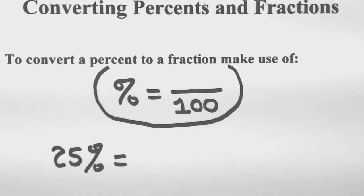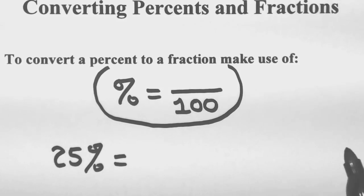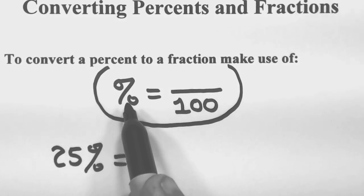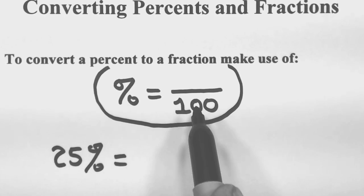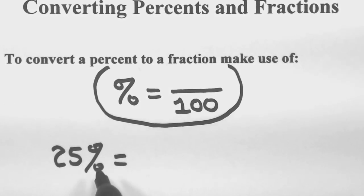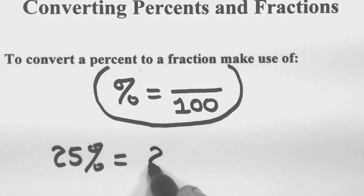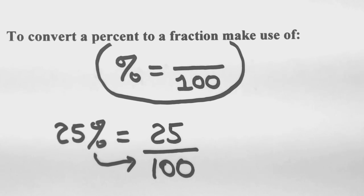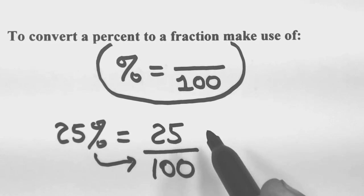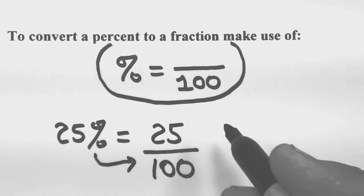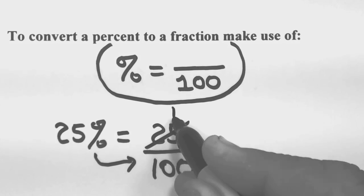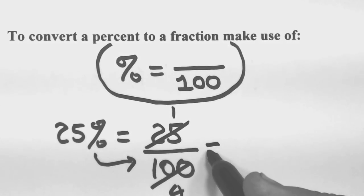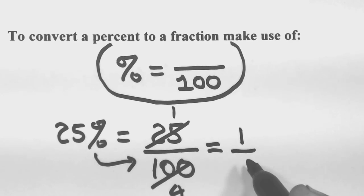Below here I've got a percent — 25% — that we want to change to a fraction. Using this relationship, we take the percent and trade it in for over a hundred: write the 25 but instead of the percent sign, trade it in for over a hundred. That gives you a fraction ready to go. Now just reduce it — twenty-five goes once into twenty-five and four times into a hundred, so twenty-five percent equals one-fourth.